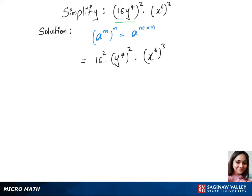We can now write this as 16 squared is 256, times y to the power 4 times 2 — using the product rule — times x to the power 6 times 3, again by the product rule.